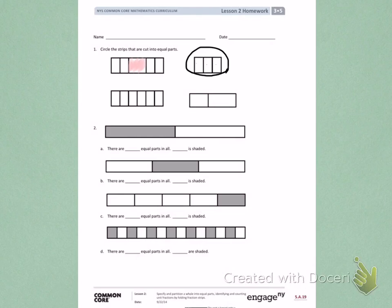Underneath, I have 1, 2, 3, 4, 5, 6 sections that are also divided equally. So this is equal parts.